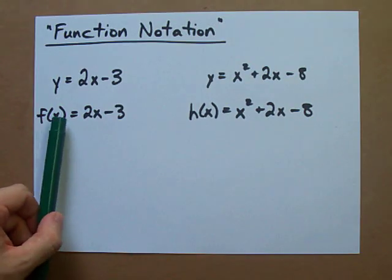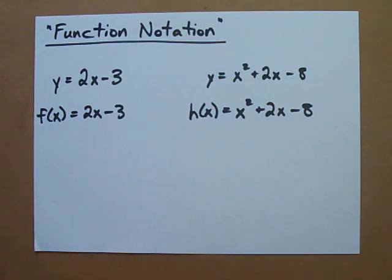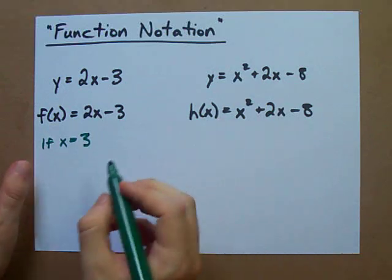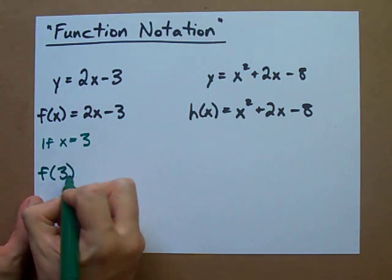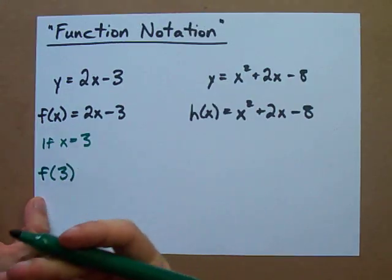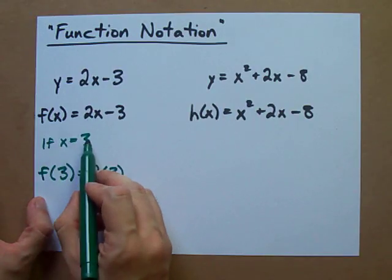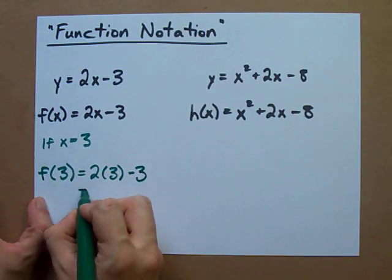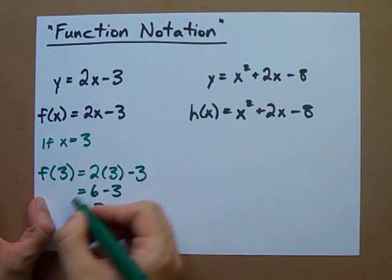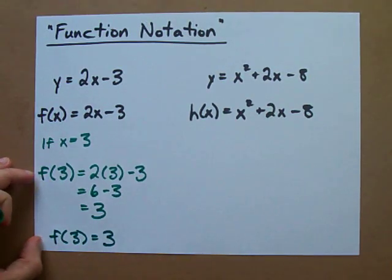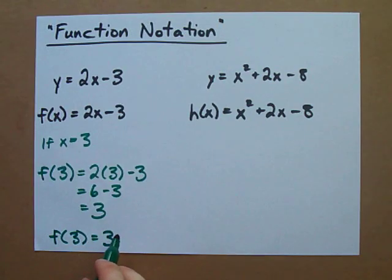For example, if x is 3, then we say f of 3. See how we're plugging in 3 for x? Because x is 3, it's 2 times 3. See, 2 times x is 2 times 3 minus 3. 2 times 3 is 6 minus 3, turns out to be 3. And so what we say is that f of 3 equals 3, rather than just saying y equals 3.